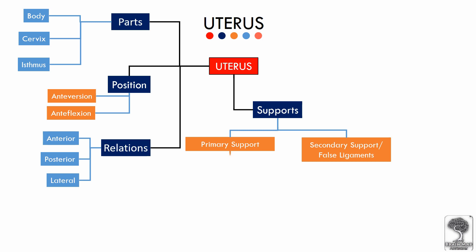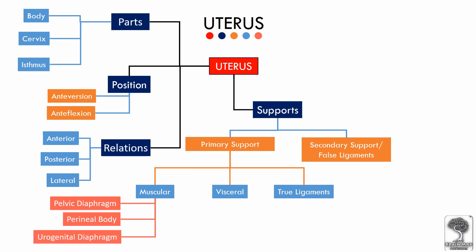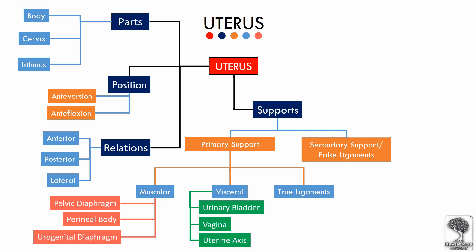The primary supports can be subclassified into three. First, the muscular or active supports of the uterus given by the pelvic diaphragm, perineal body, and urogenital diaphragm with distal urethral sphincter mechanism. The viscera in relation to the uterus — like the urinary bladder in front, vagina inferiorly — and most importantly the uterine axis, the angle of anteversion and anteflexion, play an important role in the support of the uterus.